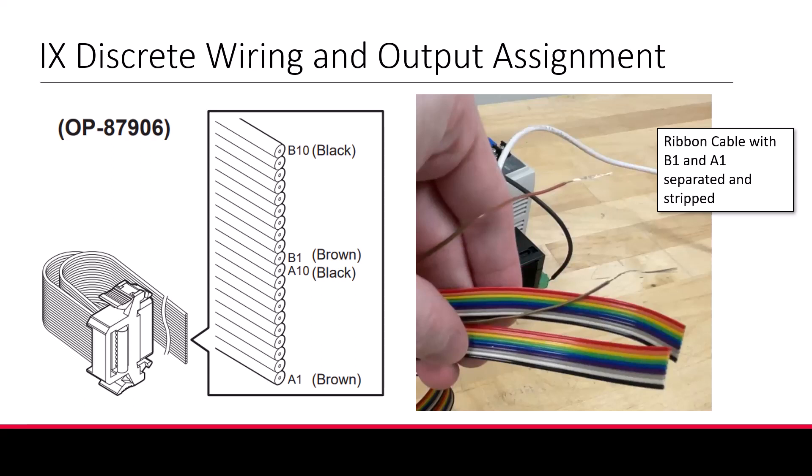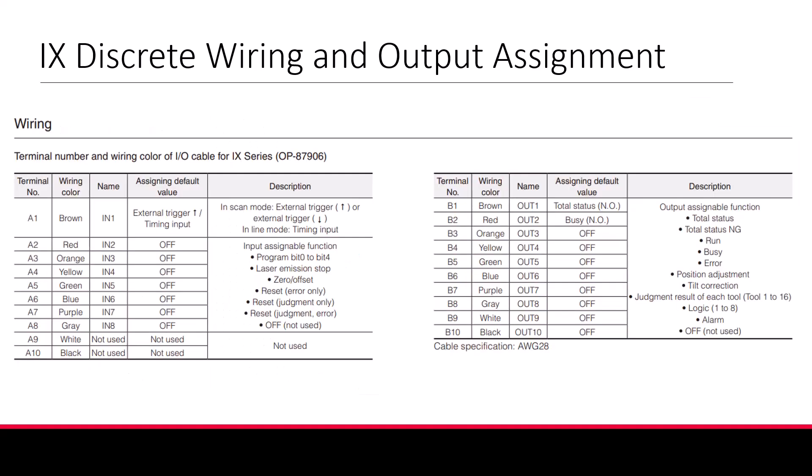By default, your bottom brown wire, terminal A1, is assigned as your external trigger or timing input. Your middle brown and red wires are assigned as normally open outputs. Brown or B1 is assigned to total status OK by default, and red or B2 is assigned as busy. This means the brown B1 wire will send a signal when the sensor determines an OK judgment apart, and the red B2 wire will send a signal when the sensor is in the middle of determining its judgment. The full IO cable mapping is on screen here for reference.